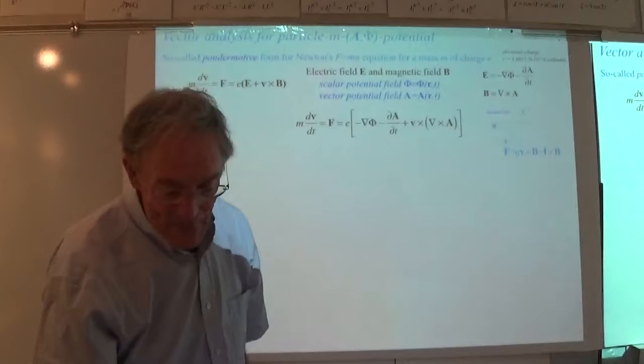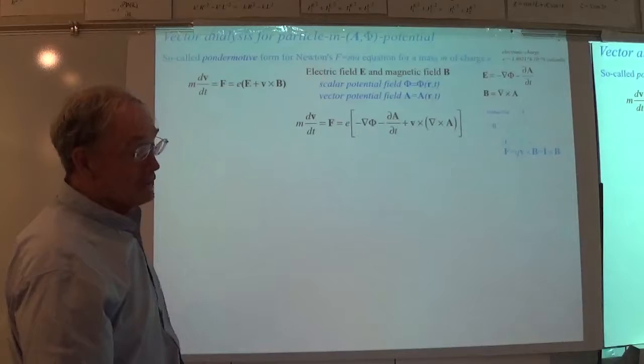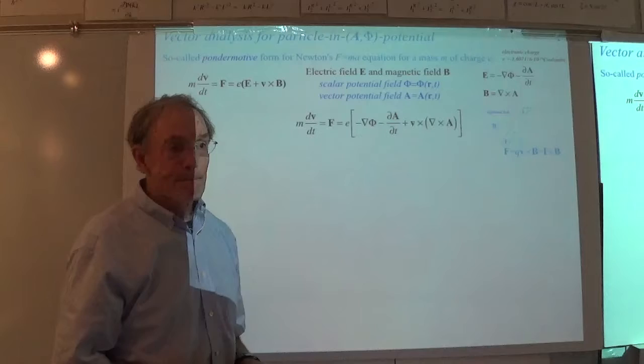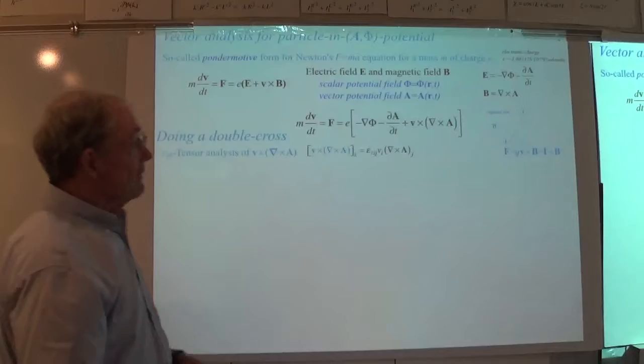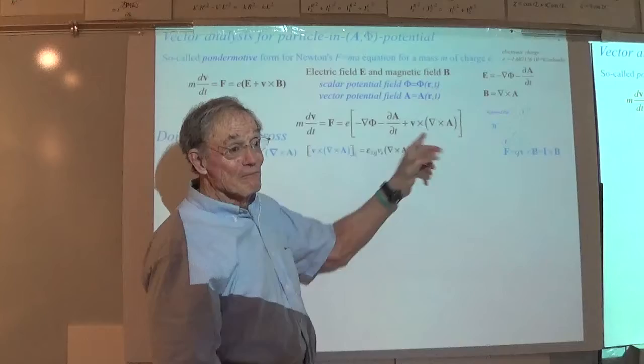So this V cross B term has to be turned into Lagrange's equations in order to make it into classical mechanics in its normal form. That's not an easy task at all. One of the things you have to do first is figure out a nice way to handle the double cross product. And that's where the epsilon tensor comes in.